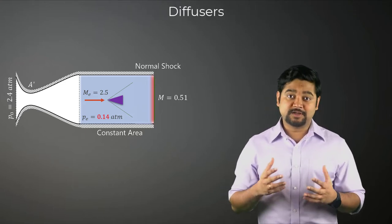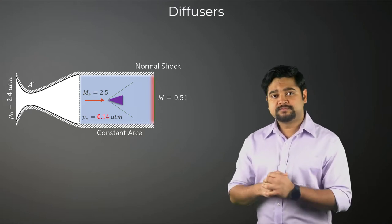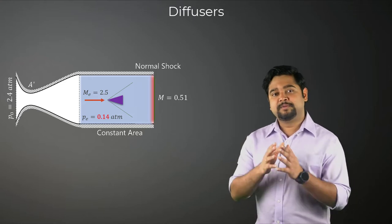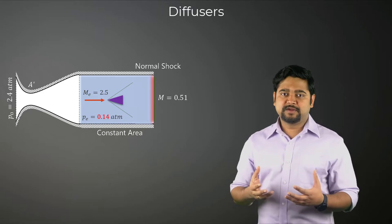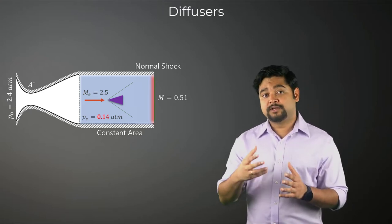Any duct designed to slow down incoming gas flow to a lower velocity is called a diffuser. This incoming flow can be either subsonic or supersonic depending on the application. It is designed in such a way that the loss in total pressure is minimal during the slowing down of the flow.